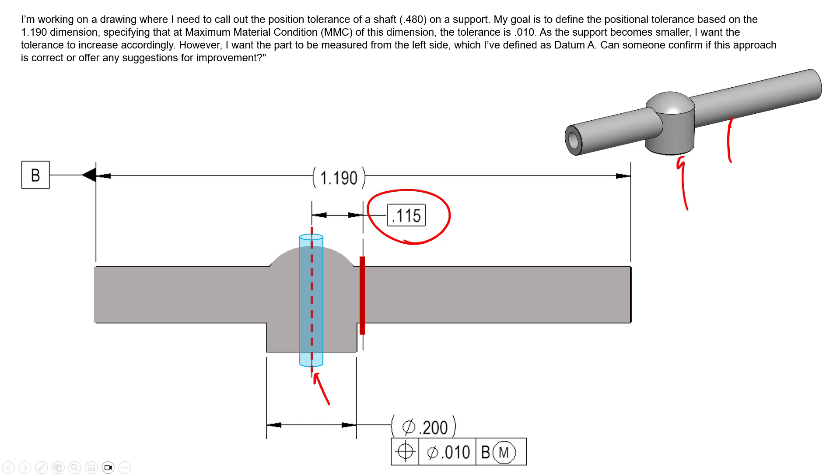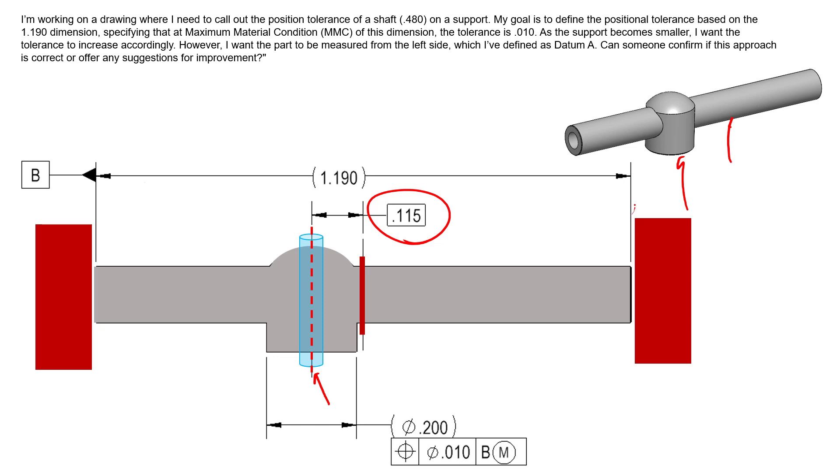Now to simulate Datum B, we would have two parallel planes that are sitting at the MMB condition—in other words, the largest condition. It's the MMB boundary, and that's what we're referencing here. We're saying at MMB, this is your setup, and so we get a little bit of datum shift if this part comes in small.